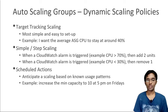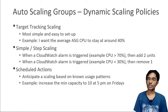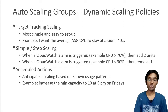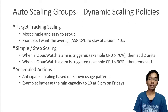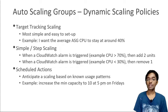Let's talk about Auto Scaling Groups. In the ASG, the first kind of policy we're going to see is the dynamic scaling policies. We have three kinds. The first is target tracking scaling, which is by far the most simple and easy to set up. All you have to do is take a metric - for example, the average ASG CPU - and give it a target, say 40%. If the CPU is too high, the ASG will add instances, and if the CPU is too low, it will terminate instances.